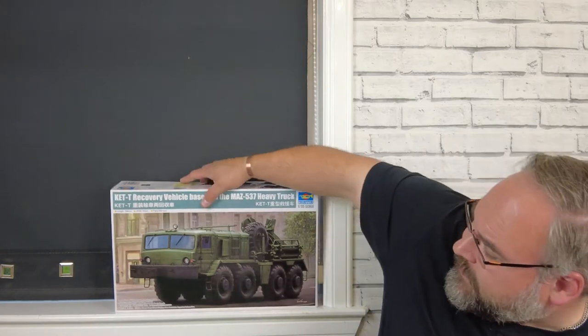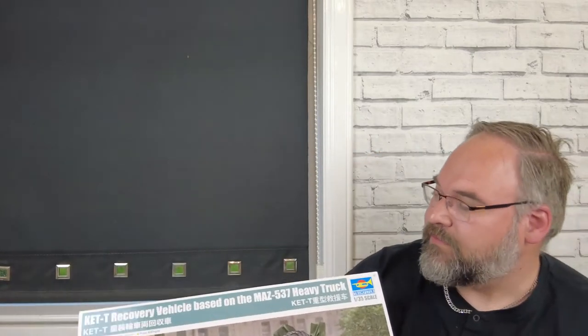Hello, welcome back to the Kitchen Table Modeler. My name is Ian and this is my kitchen table where I do all my modeling. Back again for another in-box review of Trumpeter's reasonably new 1:35th scale KET recovery vehicle based on the MAZ 537 heavy truck.